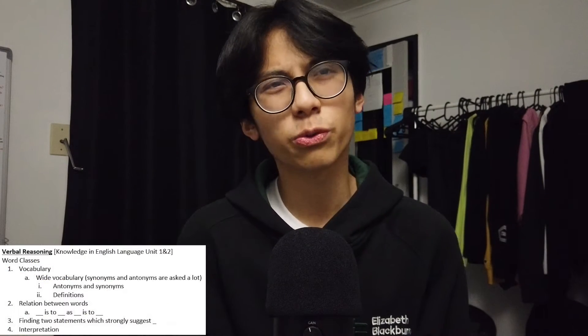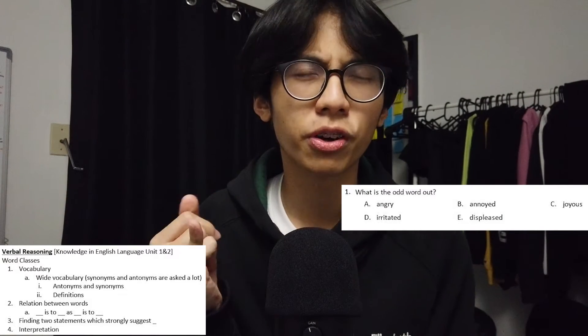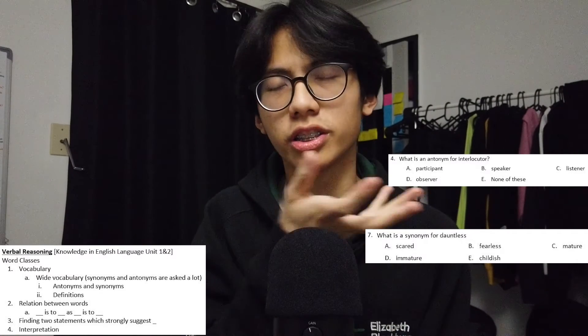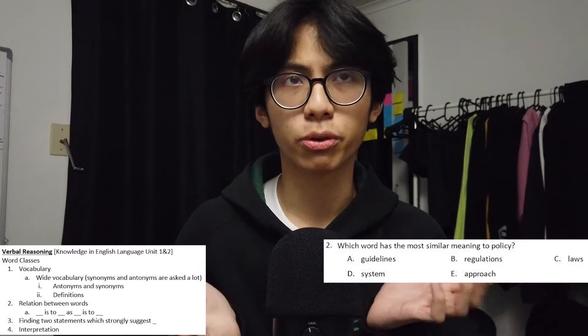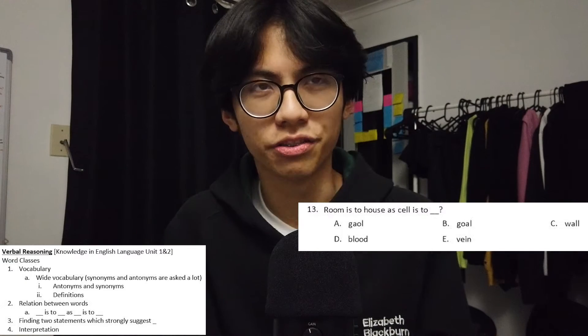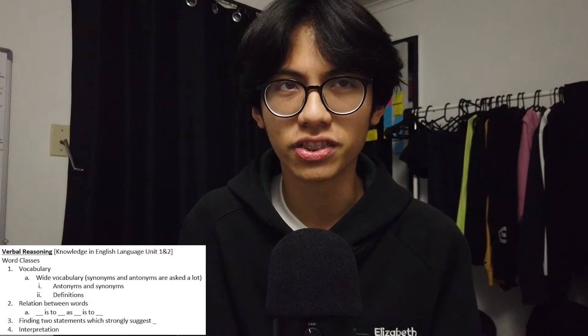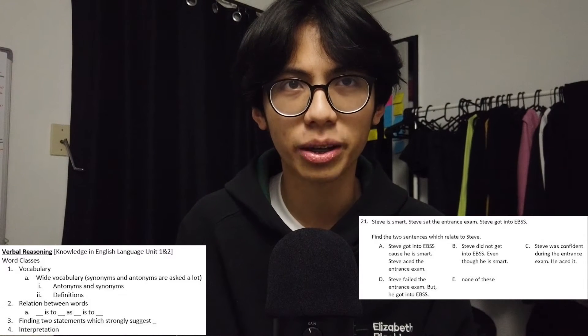For verbal reasoning, there isn't much knowledge necessarily, but there are core components from English Language Units 1 and 2 which you could learn. You need to have a wide vocabulary as they'll use a diverse range of words and refer to antonyms and synonyms. They'll also include questions asking for definitions of words, and relation-type questions such as 'room is to house as cell is to blank' — in this case the answer would be 'jail.' I'd recommend reading as much as you can. There's also a question type about finding two statements which strongly suggest something.